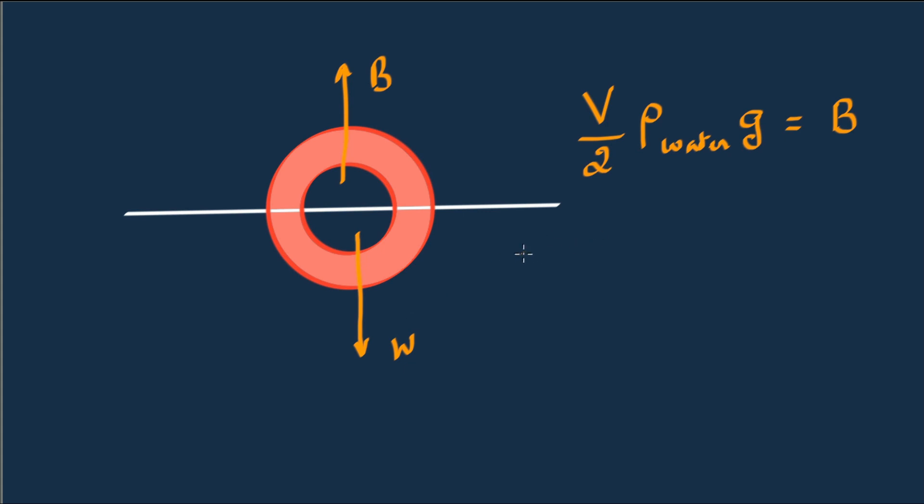Let's say the fraction F of the total volume is the cavity. Therefore the volume of the actual metal, the stainless steel, is V minus this, multiplied by density of steel, multiplied by g, is the weight.